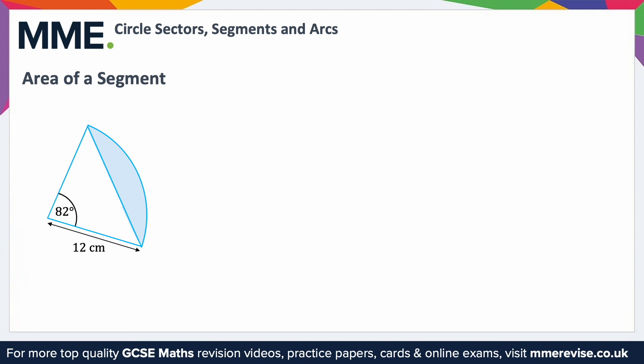The area of a segment is a little bit trickier. The segment is effectively the end of a sector. If we calculate the area of the sector and then take away the triangle, that will give us the segment. Recall the area of a sector is angle over 360 times πr².